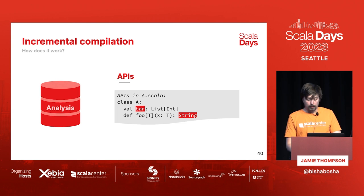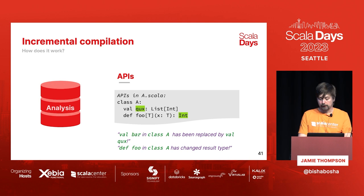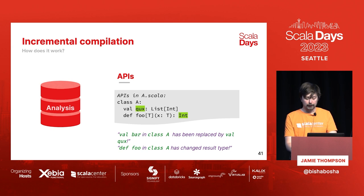More concretely, once upon a time A used to have a value `bar` and a method `foo` returning String. When you change the file, you rename `bar` to `kooks` and change the result type of `foo` from String to Int. Because we know these changes occurred, they'll have a different hash in the name hashing, meaning any file that depended on those definitions should be recompiled as well.